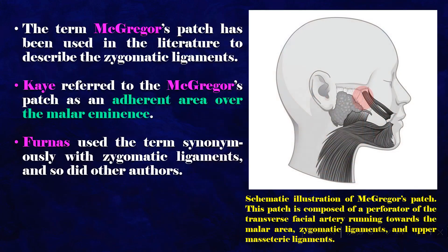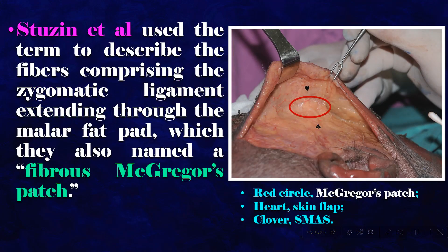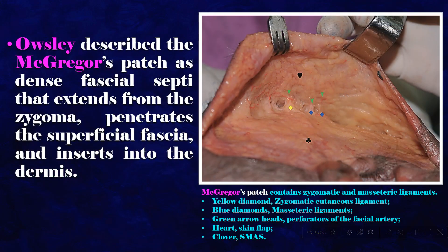The term McGregor's patch has been used in the literature to describe the zygomatic ligaments. Kay referred to it as an adherent area over the malar eminence. Furness used the term synonymously with zygomatic ligaments. Stusson et al. used it to describe fibers comprising the zygomatic ligament extending through the malar fat pad, which they named a fibrous McGregor's patch. Owsley described McGregor's patch as dense facial septa that extends from the zygoma, penetrates the superficial fascia, and inserts into the dermis. McGregor's patch contains zygomatic and masseteric ligaments.